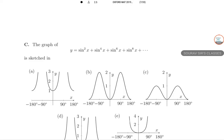Question C: the graph of y = sin²x + sin⁴x + sin⁶x + ... Every time the power of sine is increasing. When x = 0, sine 0 is 0, so y = 0 + 0 + ... At x = π/2 (90°), y = 1 + 1 + ..., which is a divergent series that goes to infinity. It's a geometric series.